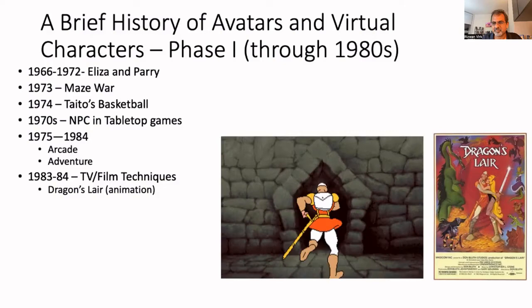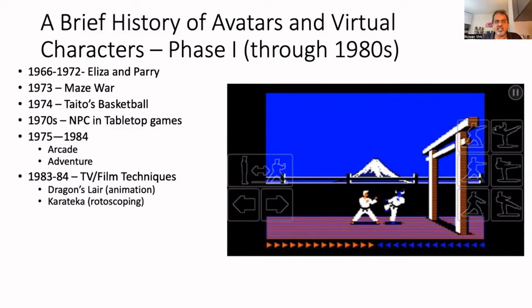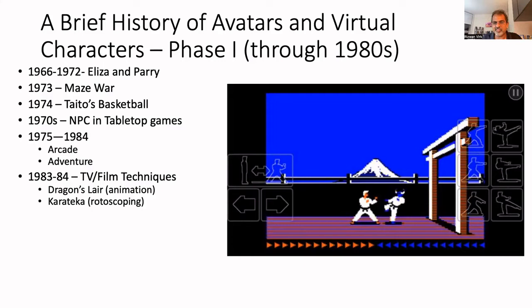In 1984, another game called Karateka came out — the first game to use rotoscoping, a technique already used in animation. The creator, Jordan Mechner, filmed his karate instructor doing the moves, then traced over the physical film and used that to inform the animations. The character animations look significantly better than in many other computer games of that era. These techniques were still considered more film territory — computer graphics were seen as something completely different. In fact, it was 1982 when we had the first real computer graphics sequence in a movie: Star Trek II, The Wrath of Khan.